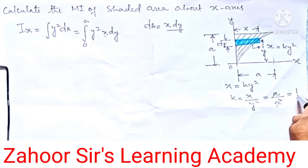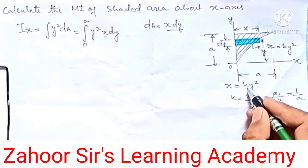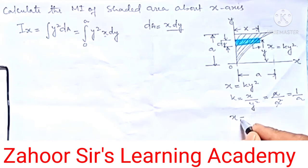So 1/a is the value of k. Now let's substitute this value of k in this equation. That means x equals 1/k. k equals 1/a, so we can write x equals (1/a)y².